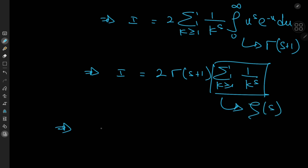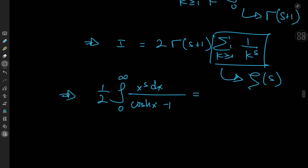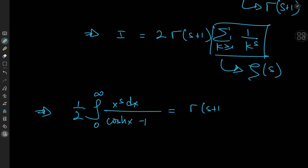So finally we have this really cool result: one half times the integral from 0 to infinity of x^s dx divided by (cosh(x) minus 1) equals Γ(s+1) · ζ(s). It's a beautiful result connecting the gamma and zeta functions.